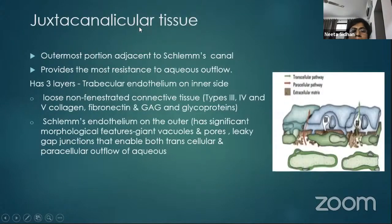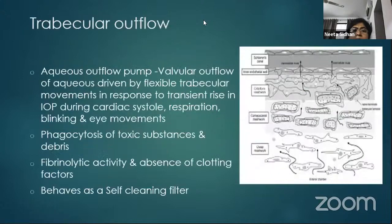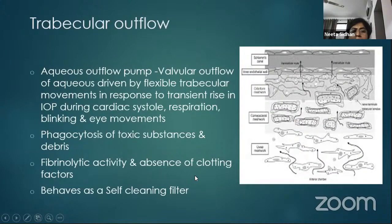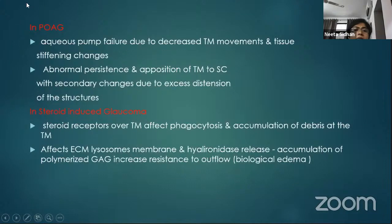The outermost juxtacanalicular tissue provides the most resistance to aqueous outflow. Unlike the other two layers, it has three layers: the trabecular endothelium on the inside, a middle layer of connective tissue, and the Schlemm's canal endothelium on the outside. This has significant morphological features like giant vacuoles and pores with leaky gap junctions, enabling both transcellular and paracellular outflow of aqueous. The trabecular outflow system is characterized by an aqueous outflow pump driven by flexible trabecular movements, phagocytosis, and fibrinolytic activity, behaving overall as a self-cleaning filter. Derangements in these mechanisms lead to pathologies like primary open-angle glaucoma and steroid-induced glaucoma.